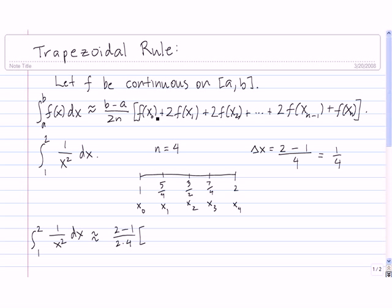Times f of x sub 0. Well, x sub 0 is 1, and f of x is 1 over x squared, so we just take the 1 there and plug it in for x. So we get 1 over 1 squared, plus 2 times f of x1. x sub 1 is 5 fourths, so we have 2 times f of 5 fourths, which is 1 over 5 fourths squared.